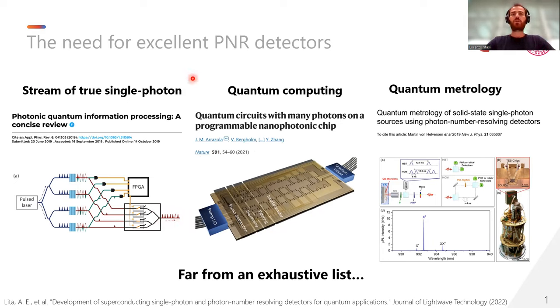Of course, linear optical quantum computation would need very good PNR detectors to assess the final photon number state at the end of the quantum computation operation. Lastly, quantum metrology would benefit from PNR detectors to assess the purity of single photon sources or the photon number state produced by more exotic quantum systems.